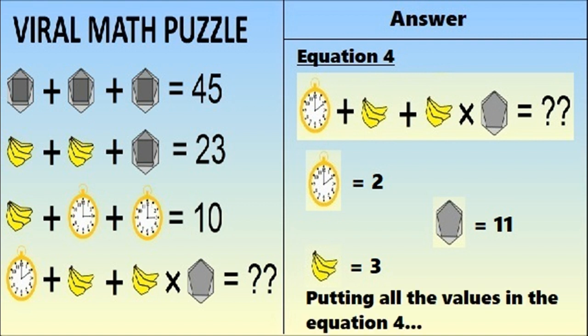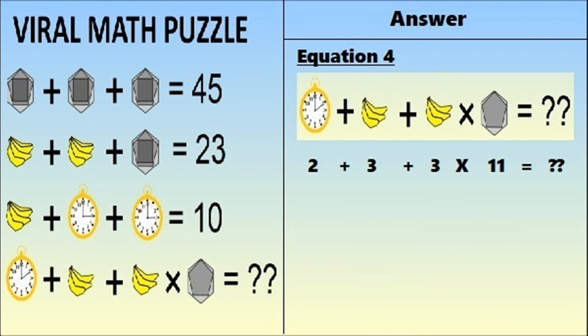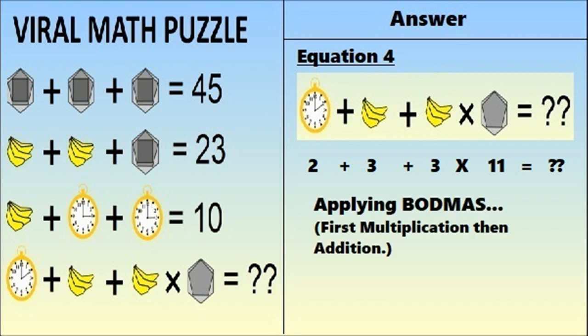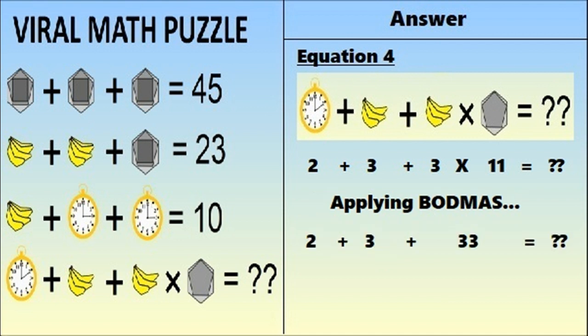Putting all values into equation 4: 2 plus 3 plus 3 times 11 equals question mark. Applying BODMAS — we do multiplication first: 3 times 11 equals 33. Then 2 plus 3 plus 33 equals 38. So the correct answer to this puzzle is 38.